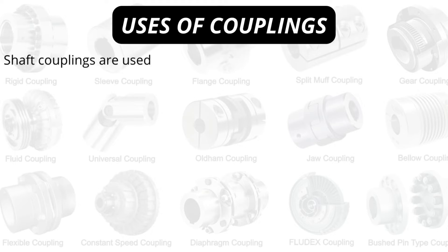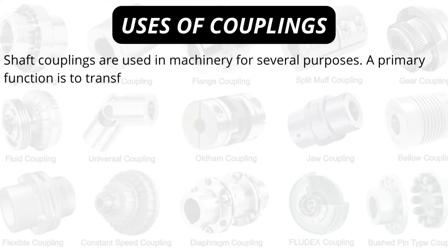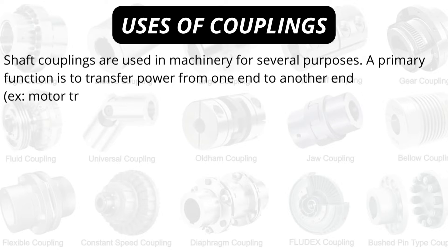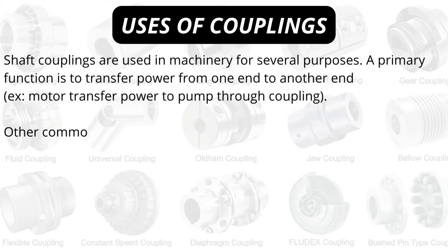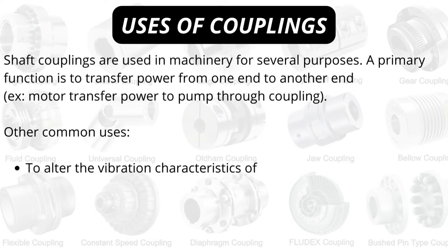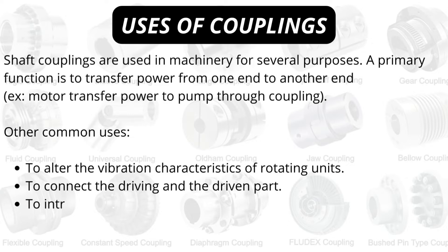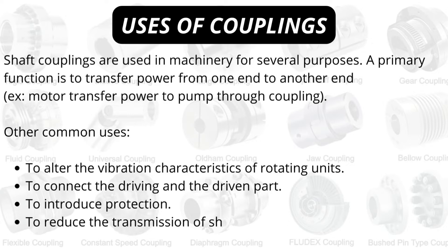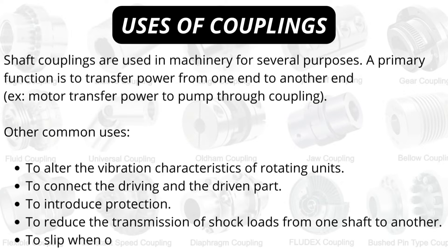Shaft couplings are used in machinery for several purposes. A primary function is to transfer power from one end to another end. For example, a motor transfers power to a pump through a coupling. Other common uses include altering the vibration characteristics of rotating units, connecting the driving and driven parts, introducing protection to reduce the transmission of shock loads from one shaft to another, and to slip when overload occurs.